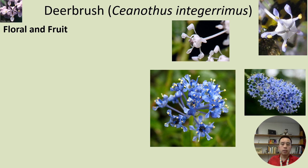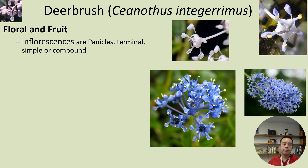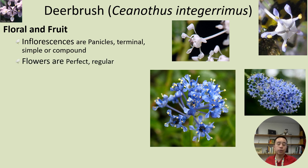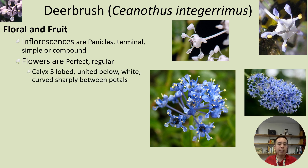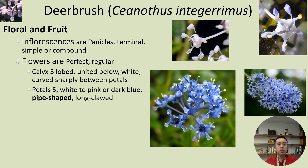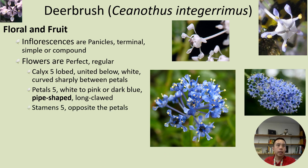For Ceanothus integrimus, its inflorescences are panicled and terminal, meaning they occur at the end of the branching, and can be simple or compound flowers. The flowers are perfect and regular. The calyx has five lobes, typically united below the lobes, and can be white and sharply curved between petals. There are also five petals, ranging from whitish to pink to dark blue, and they are often pipe-shaped and long-clawed, as you can see in the images.